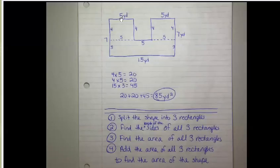And now I can multiply to find the area of all three rectangles. So 5 times 4 is 20, 5 times 4 is 20, and this one would be 15 times 3, which is 45.